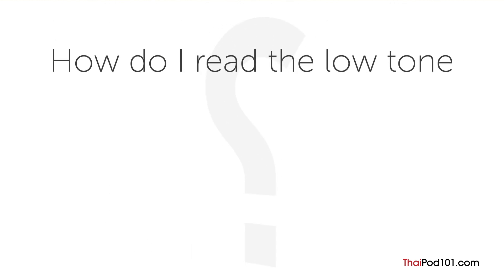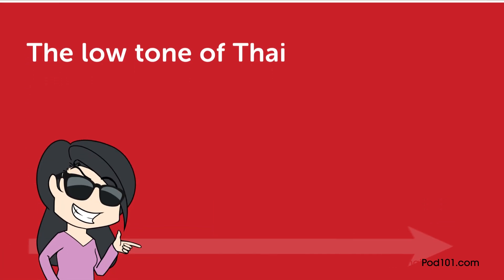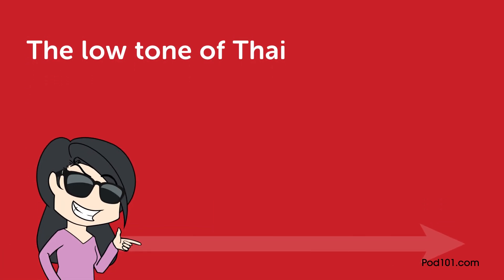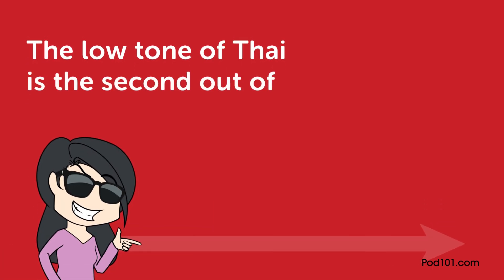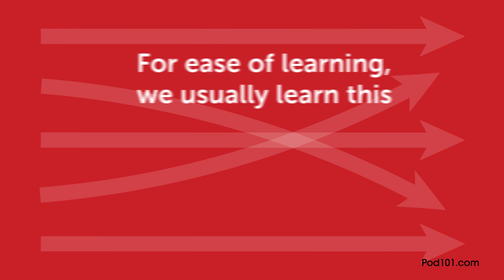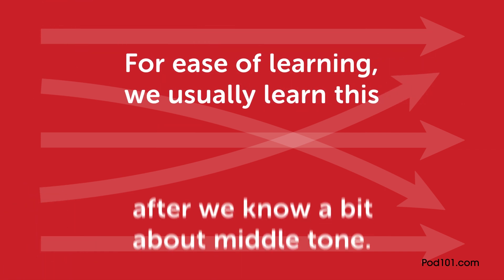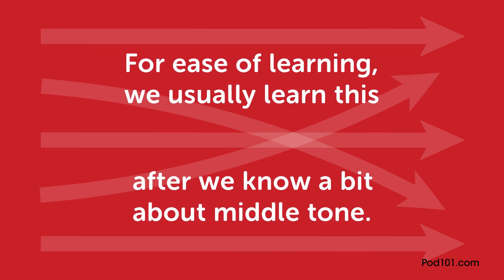Welcome to Ask a Teacher where I'll answer some of your most common Thai questions. The question for this lesson is: how do I read the low tone, or siang egg, of Thai? The low tone of Thai is the second out of five tones of Thai. We usually learn this after we know a bit about middle tone.